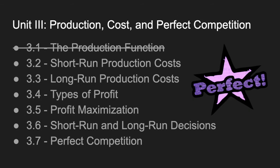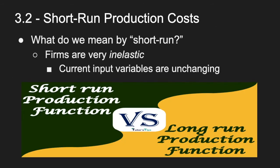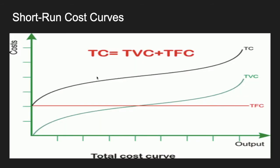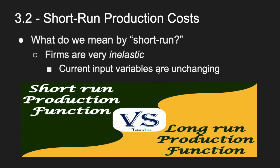Let's move into 3.2. In 3.2, we're looking a little bit closer. It's great to know how much we're producing, but it's better to know how much it costs us because we need to be able to do cost-benefit analyses. So 3.2 is short run production costs. The short run is not a specific time frame — it's really different for everybody, though you can think of it as a time that's short enough where we're not able to change much about our production. Firms' input variables are not changing because we just don't have time — we don't have time to open up a new factory, for example.